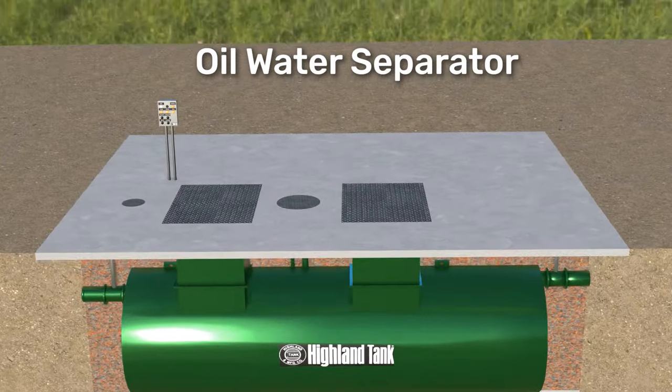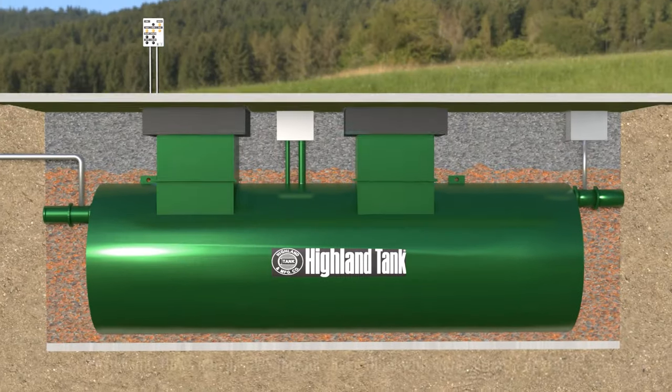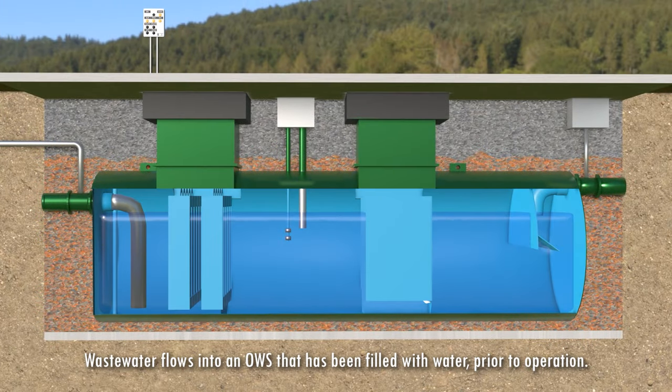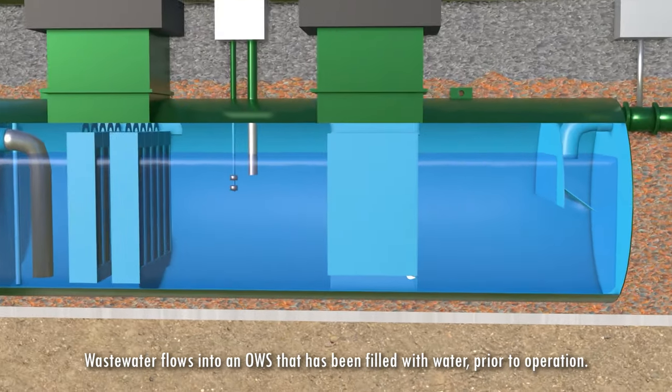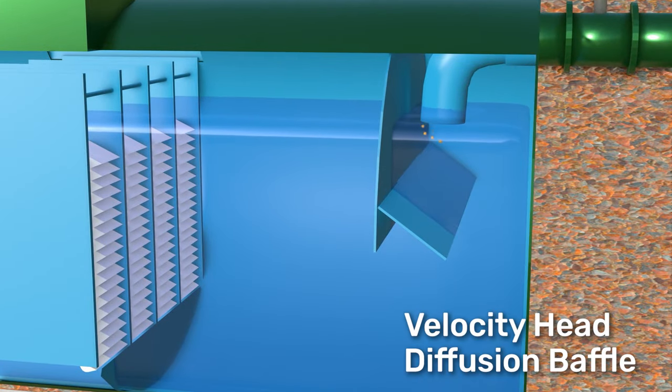So here we show a Highland tank oil water separator. The tank is full of clean water on startup and we're flowing from right to left, so the wastewater is coming in through the inlet pipe on the right side.